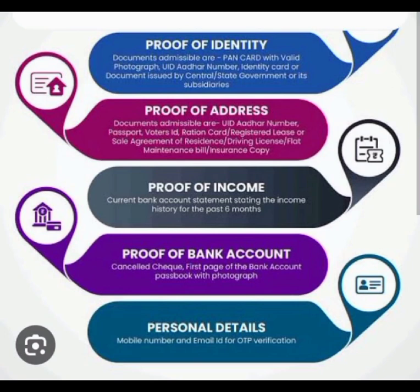Third, proof of income — current bank account statement showing income history for the past six months. Fourth, proof of bank account — a cancelled cheque or first page of the bank account passbook with photograph. Fifth, personal details — mobile number and email ID for OTP verification.